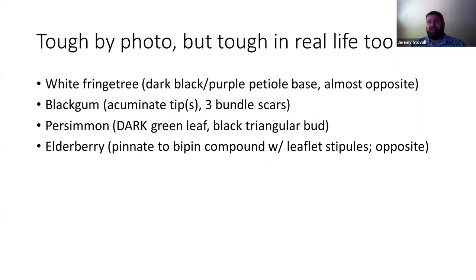White fringe tree gives people a heck of a time in the field and definitely by photos. Look at the dark purple base of the petiole where it joins the twig — it's going to be black to dark purple, looks like it stains the twig. White fringe tree is in the ash family, the Oleaceae — it's opposite but inconsistently so, what we call sub-opposite, so it may look a little alternate or a little opposite. The leaf scar is raised and then sunk in, looking like shoulder sockets.